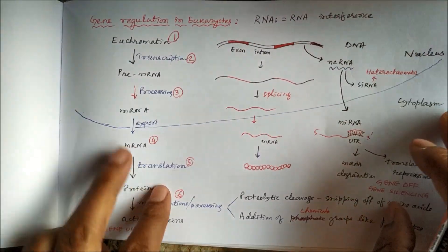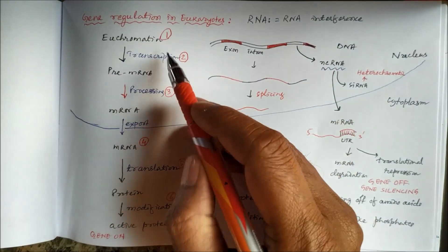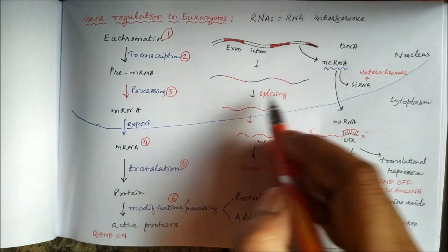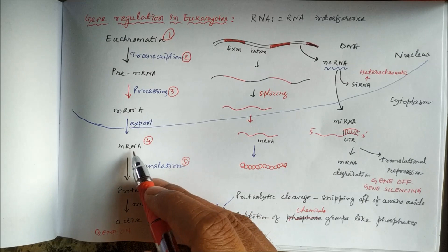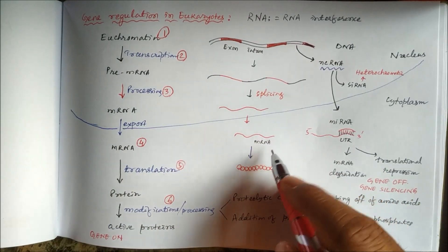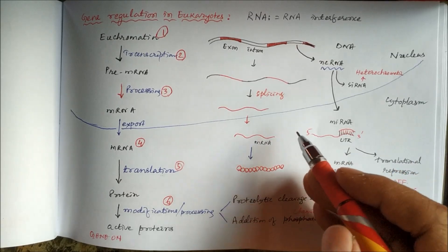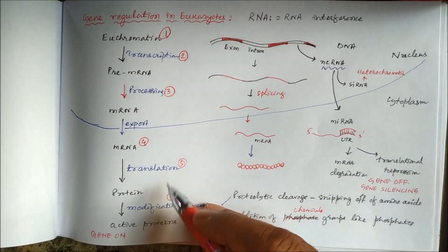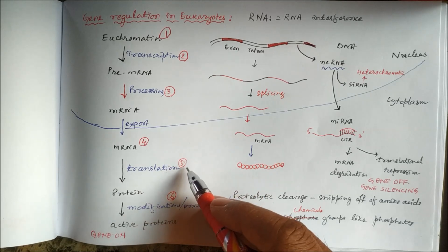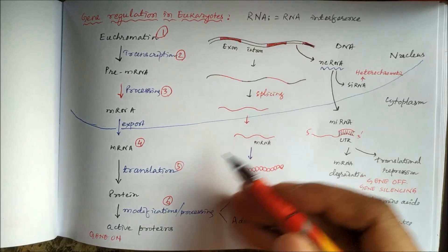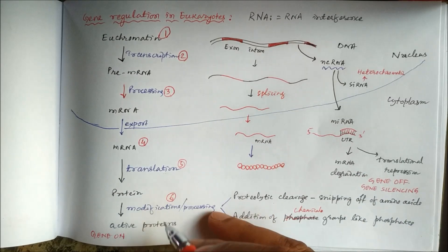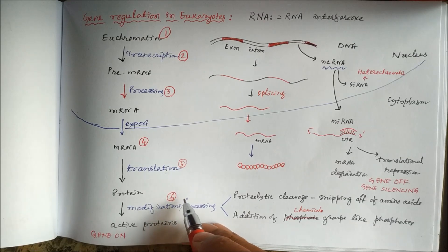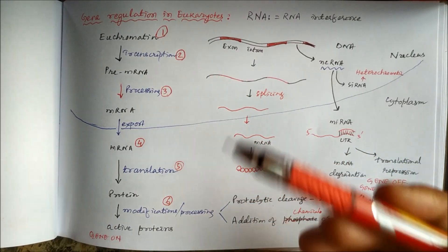The second target can be during transcription. The third target can be during processing, splicing, and export. The fourth target can be the messenger RNA itself — the mRNA can be either degraded or blocked so the ribosome cannot pass through. The fifth target is during translation, and the sixth target is during protein modifications. These are the six stages at which gene expression can be regulated in eukaryotes.